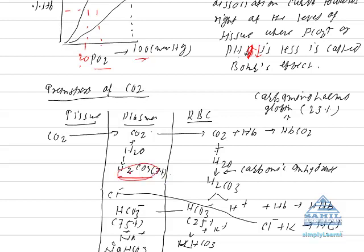CO2 formed in the tissues diffuses into plasma, where it combines with water to form carbonic acid. This is a non-enzymatic reaction occurring in the absence of enzymes, so the reaction is very slow. Therefore, most of the CO2 diffuses from plasma into RBCs.